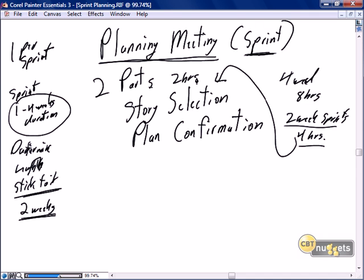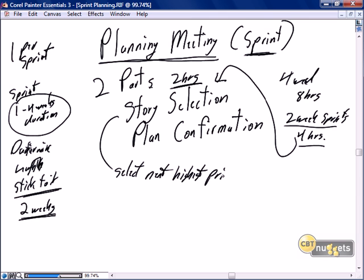We spend two hours doing story selection. We go to the product backlog with the business owner and select the next highest priority stories. The product owner is fundamental to story selection, obviously picking the stories that provide the most significant business value, but the team will influence that selection.